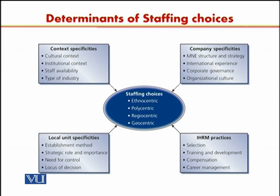The type of industry is also going to affect the staffing choice of your organization. And then, in the top right corner, you can see the factors which affect staffing choices are company specificities — what type of company-specific factors are there, such as the company's structure and strategy.